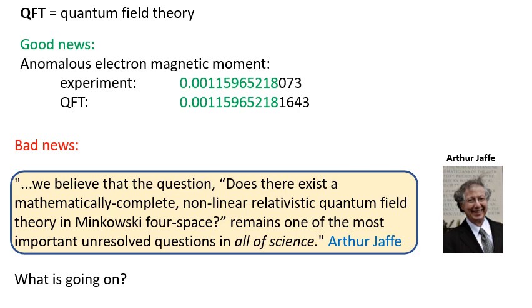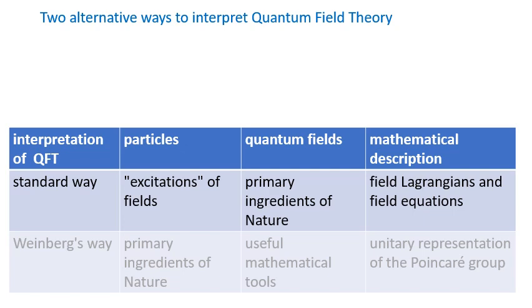Why such pessimism? I would like to say a couple of words about the big picture and give you a plan for the entire series of lectures. My idea is to tell you about what I call the Weinberg's way of interpreting quantum field theory. The standard interpretation assumes that the primary ingredients of nature are quantum fields, and a mathematical formulation should start from defining field Lagrangians and field equations.